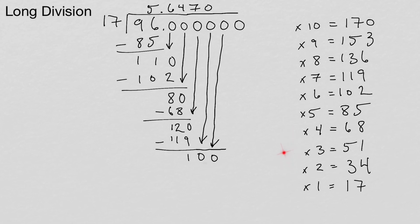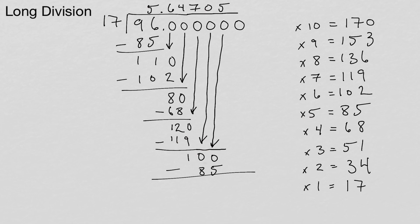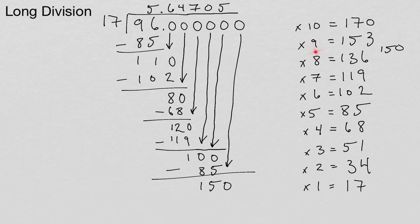100 is between 85 and 102, so we take the number down — 5 — and write that in. 5 times 17 is 85, so we write 85 and subtract: 100 minus 85 gives us 15. 15 is not on the chart, so we bring down a 0 giving 150. 150 is between 136 and 153 on the chart — between 8 and 9 — so we take 8 and write it in.